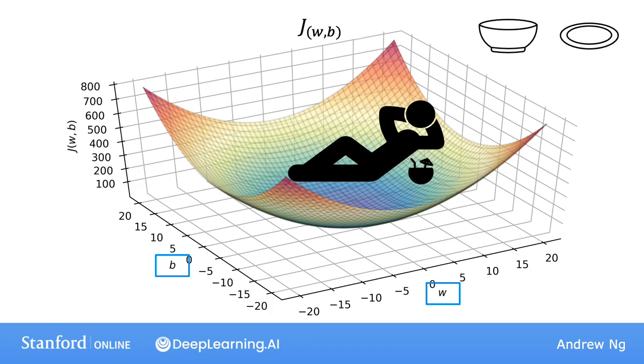And I just want to point out that any single point on this surface represents a particular choice of w and b. For example, if w was minus 10 and b was minus 15,